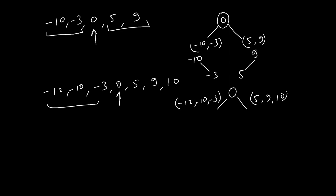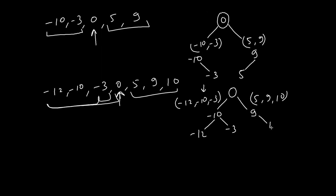The list is divided into two parts. Now we will again recursively check for the middle of the left and right sides. For the left side, the middle is minus 10, so we make minus 10 the root. Greater than minus 10 is minus 3, which goes to the right side, and minus 12 is smaller so it goes to the left. Among 5, 9, and 10, the middle is 9, so 9 is the root — 10 goes to the right side and 5 goes to the left. This is how we construct the binary search tree out of a linked list or an array.